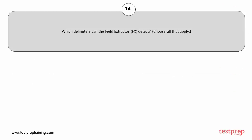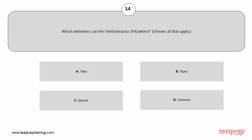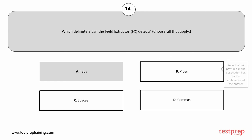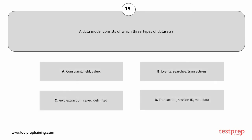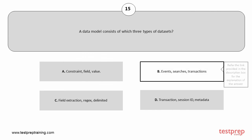Question number 14. Which delimiters can the field extractor detect? Choose all that apply. Your options are: A. Tabs. B. Pipes. C. Spaces. D. Commas. Question number 15. A data model consists of which three types of data sets? Your options are: A. Constraint, Field, Value. B. Events, Searches, Transactions. C. Field Extraction, Regex, Delimited. D. Transaction, Session ID, Metadata. The correct answer is option B.